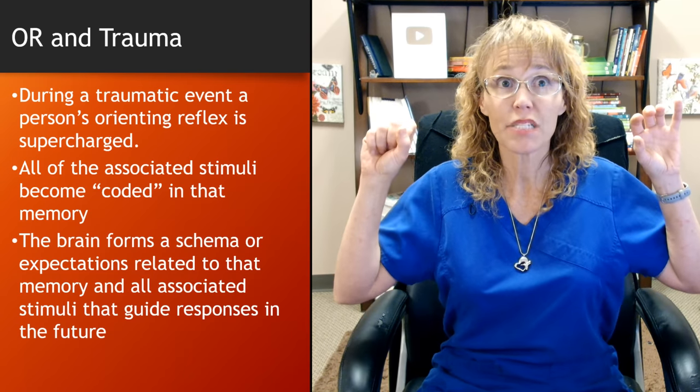The brain forms a schema — expectations related to that memory and all associated stimuli — that guides responses in the future. You may be involved in a traumatic event and there's a smell, somebody wearing a particular cologne, and your brain files that with the trauma schema. Even if that person wearing the cologne is not directly threatening you, that smell becomes associated with the trauma. So when that smell is encountered in the future, it travels up through the olfactory nerves and the brain says, 'I remember that smell — it reminds me of that time — so I'm going to put you on high alert.'